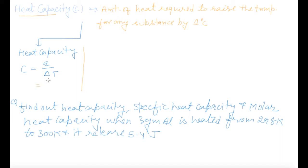Number one, in terms of heat capacity. So Q is 5.4 joules and delta T is 300 minus 298, so delta T will be 2 Kelvin. You have to solve this one.